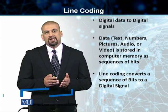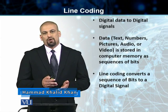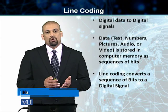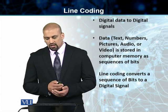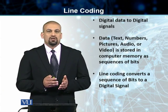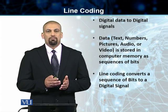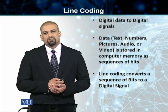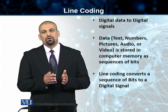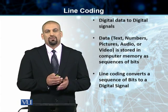Our data can be in the form of text, it can be in the form of numbers, it can be pictures, or it can be audio or a video. All of these different forms of data are expressed or represented by a sequence of bits. The conversion of these bits into a digital signal is the process of line coding.